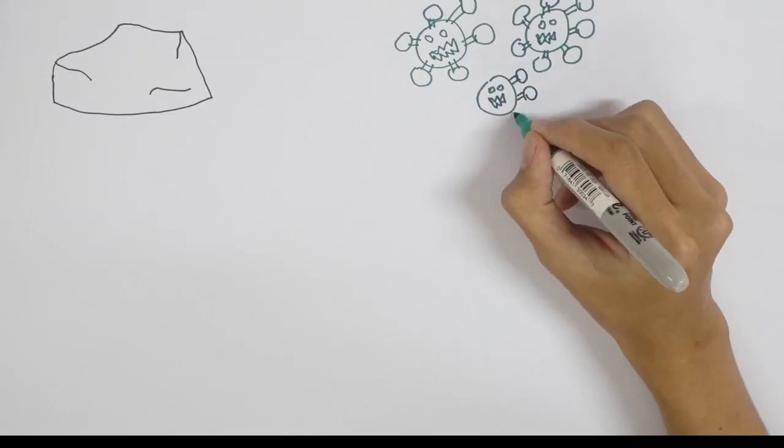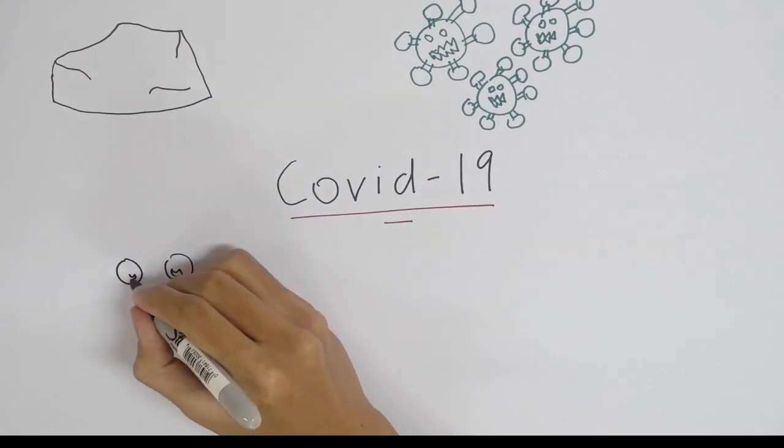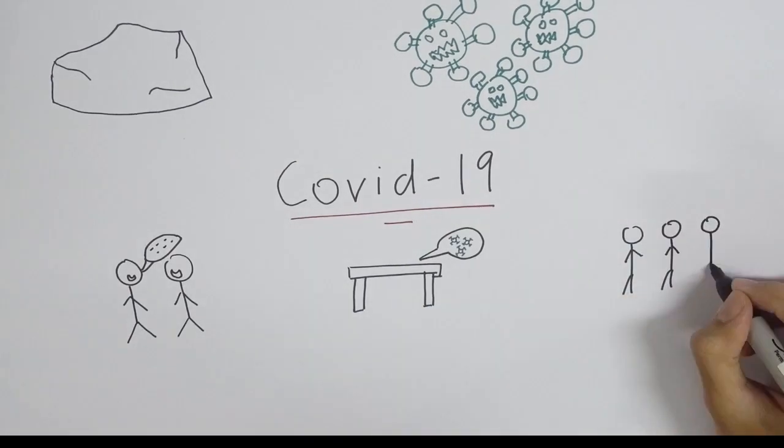Unless you've been living under a rock, you know that there has been a pandemic going on. COVID-19 is a virus that spreads from person to person through direct, indirect and close contact with infected people.